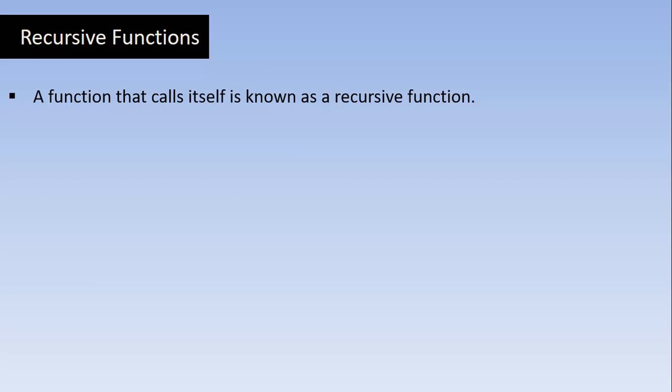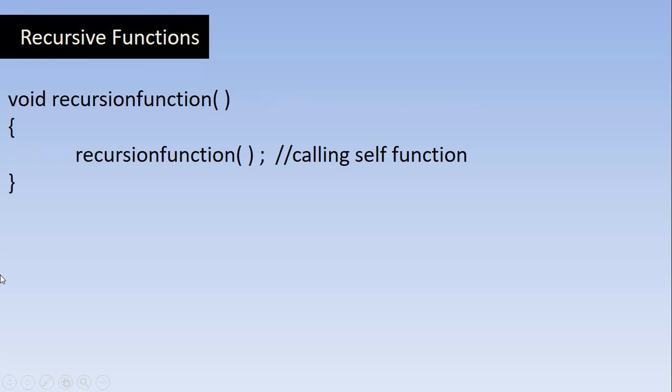A Recursive Function is a function like any other normal function, except that function is going to call itself. A function that calls itself is known as a Recursive Function and the process is called Recursion. Recursion means something that happens repeatedly in a self-similar way. For example, look at this Recursion Function.